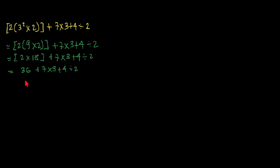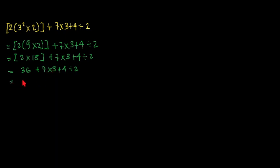Now we will look at which of these operations we are going to use. On these remaining terms, we have multiplication and division. Looking from left to right, the multiplication appears first, so we are going to do the multiplication. So we have 36, then 7 times 3, that is 21, plus 4, divided by 2.